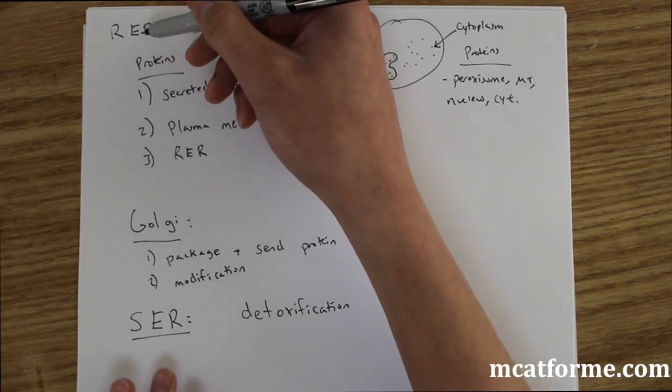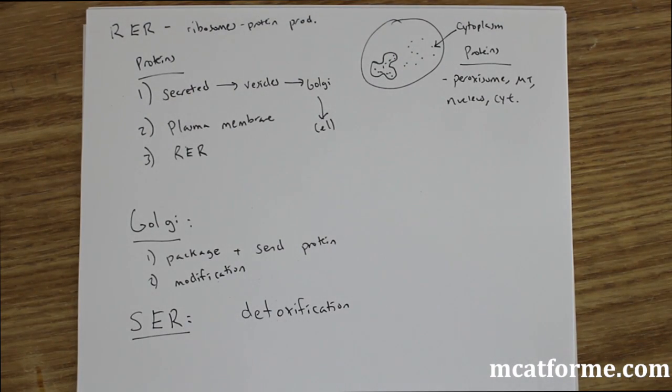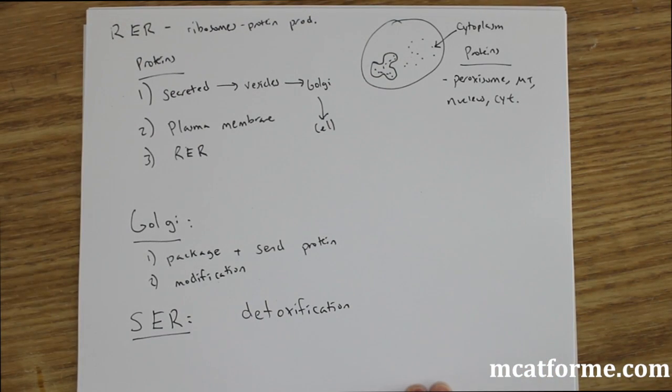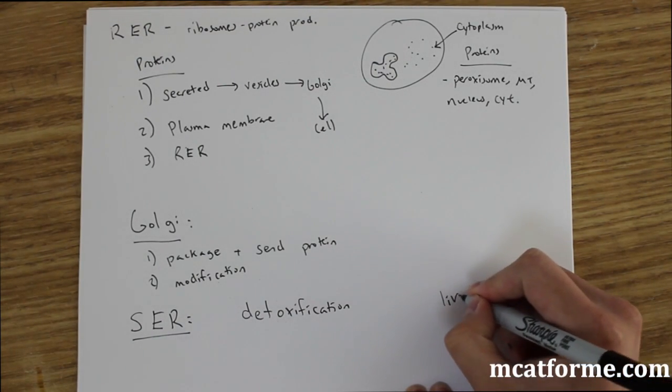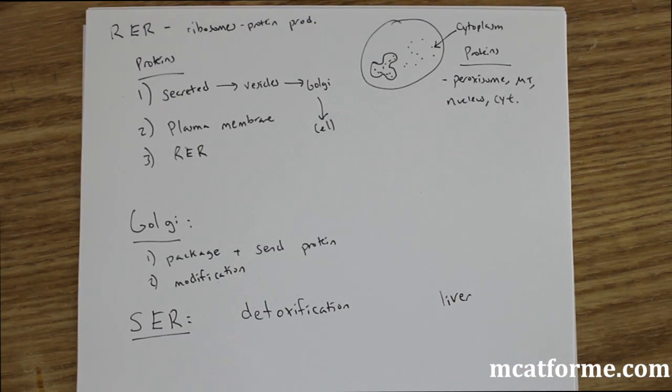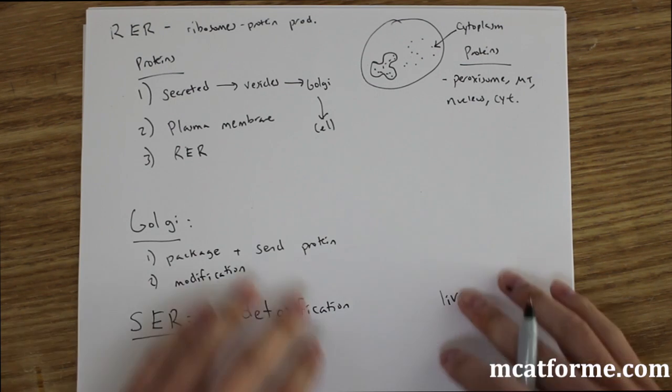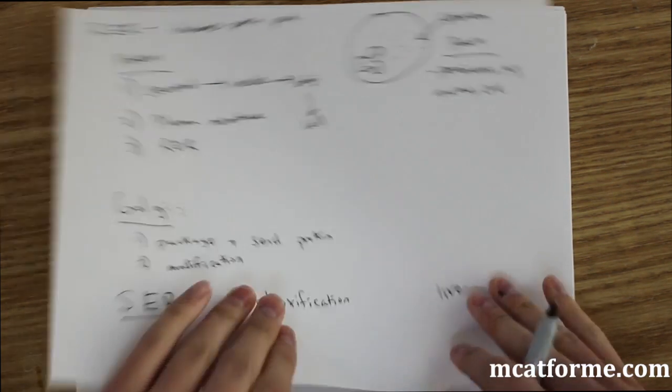So a question that they may be able to ask you is, where would we see the most amount of the smooth endoplasmic reticulum? Because we have a ratio between RER and SER. Say we had a much higher ratio of SER to RER. Where would that occur? Well, if we know it's detoxification, that would definitely have to do with the liver. Smooth ER is definitely very prevalent in the liver. And it has a couple other functions, such as producing in the gonads, but don't worry about those for the MCAT.